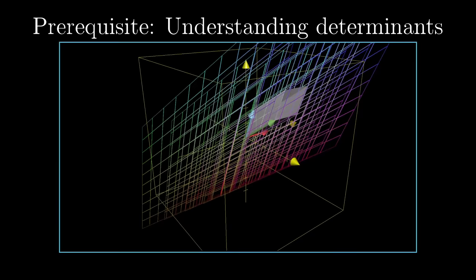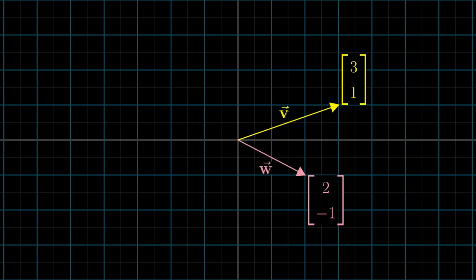For the 2D cross product v cross w, what you do is you write the coordinates of v as the first column of a matrix, and you take the coordinates of w and make them the second column, then you just compute the determinant.